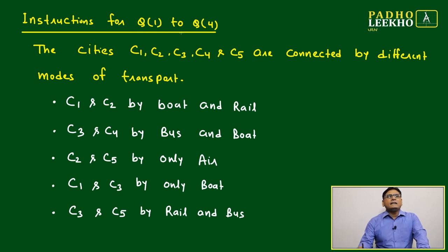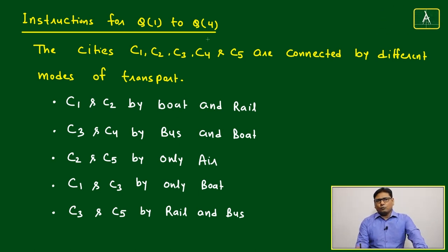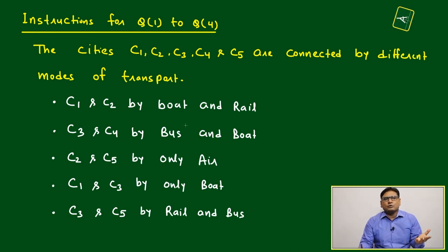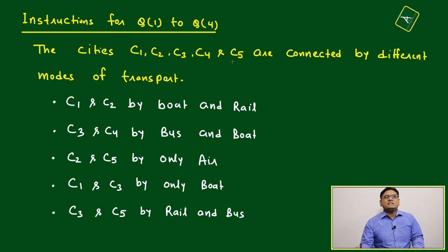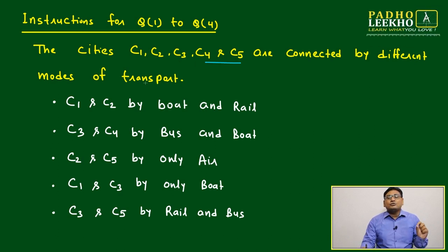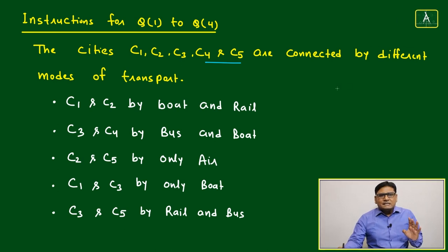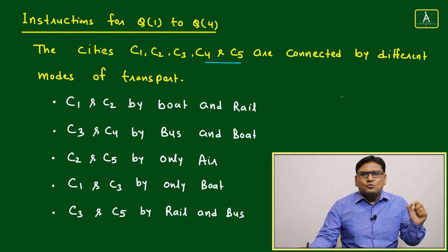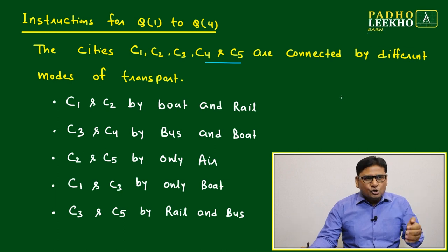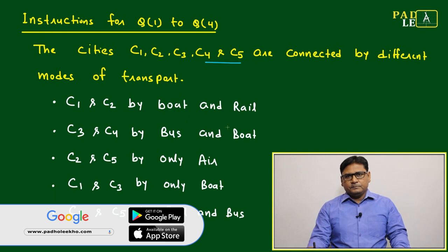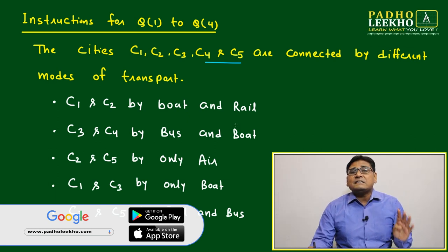We will deal with questions one through four. Based on the given instructions, we'll try to solve the questions. The cities C1, C2, C3, C4, and C5 are connected by different modes of transport. When different modes of transport are mentioned, we should immediately look at the questions and identify how many types of transport are given.